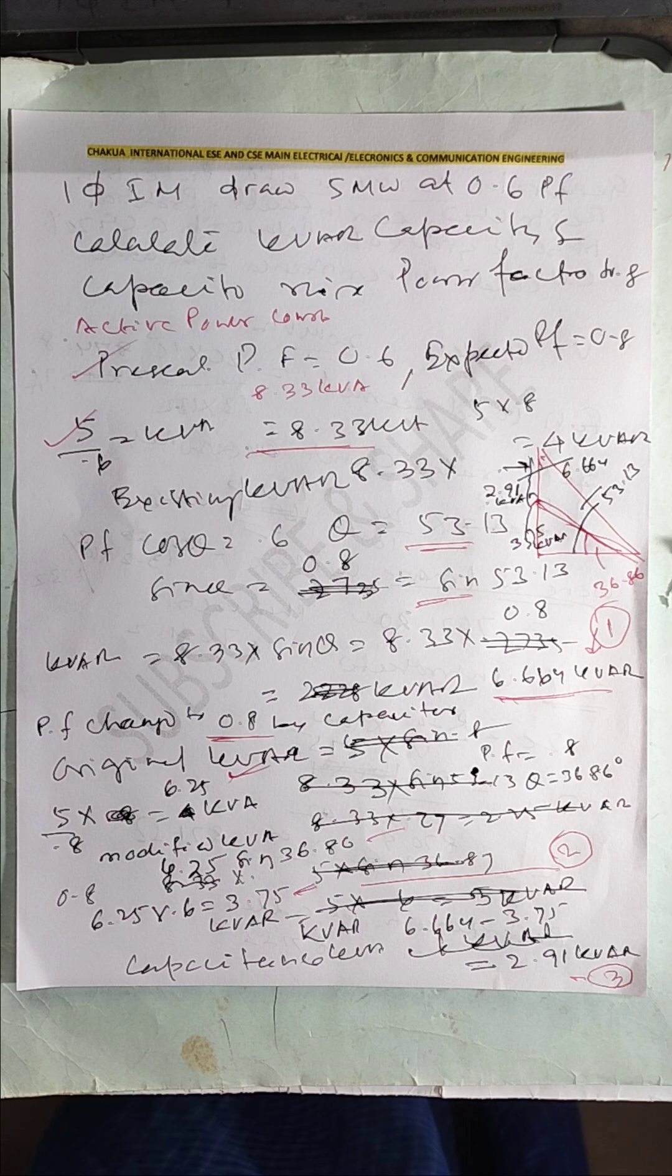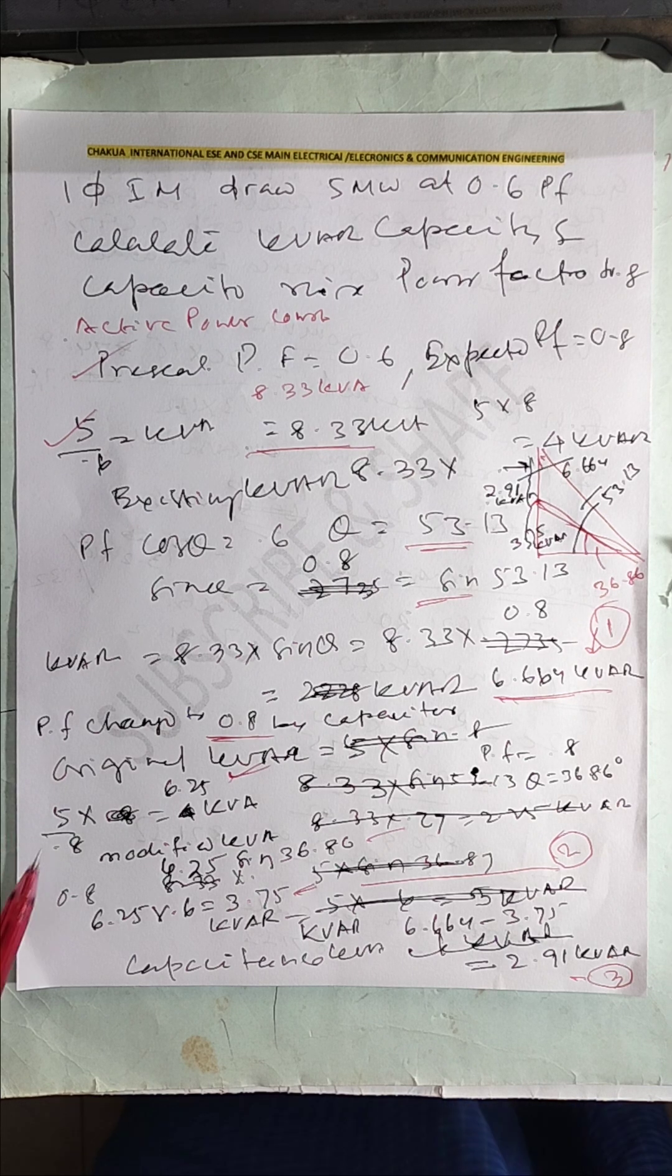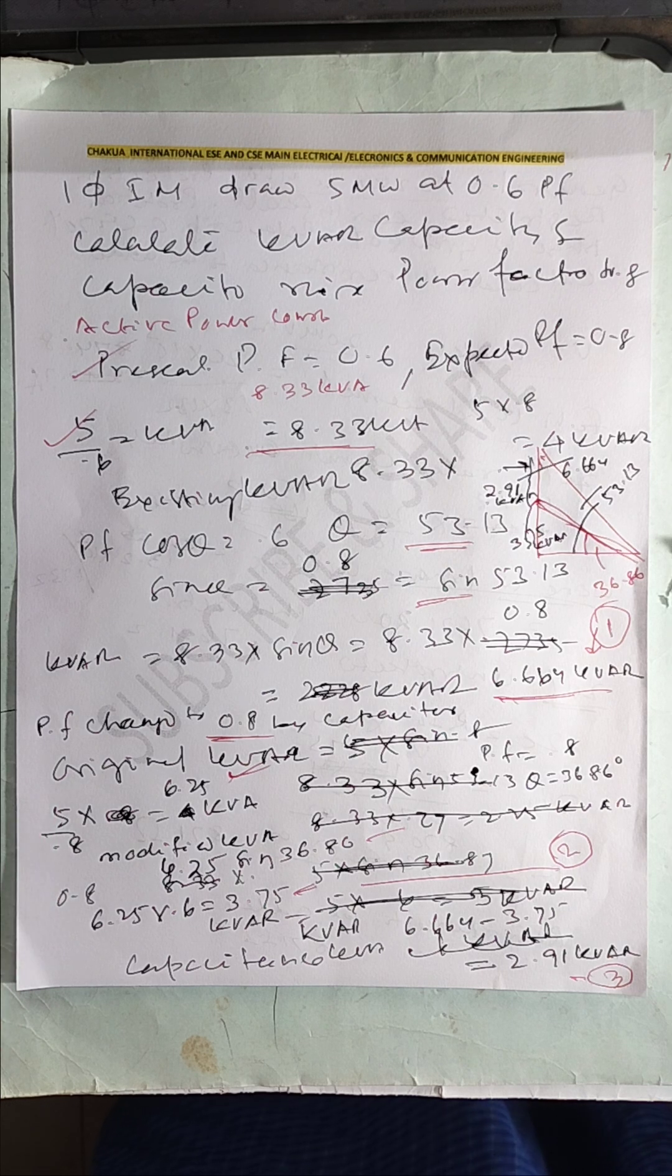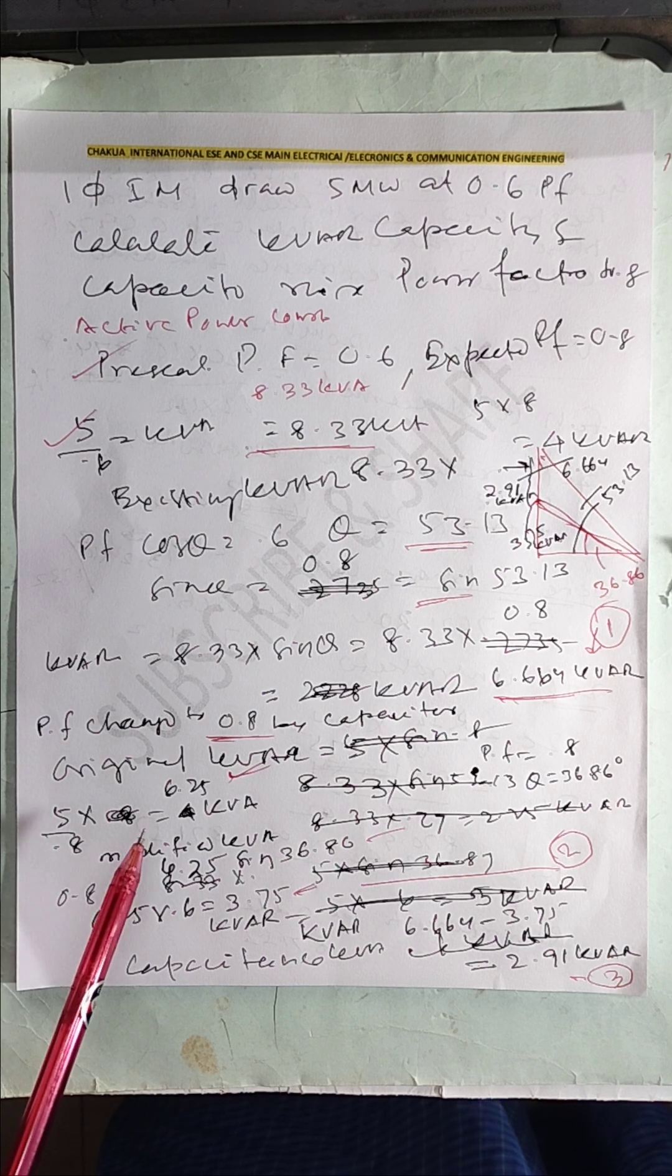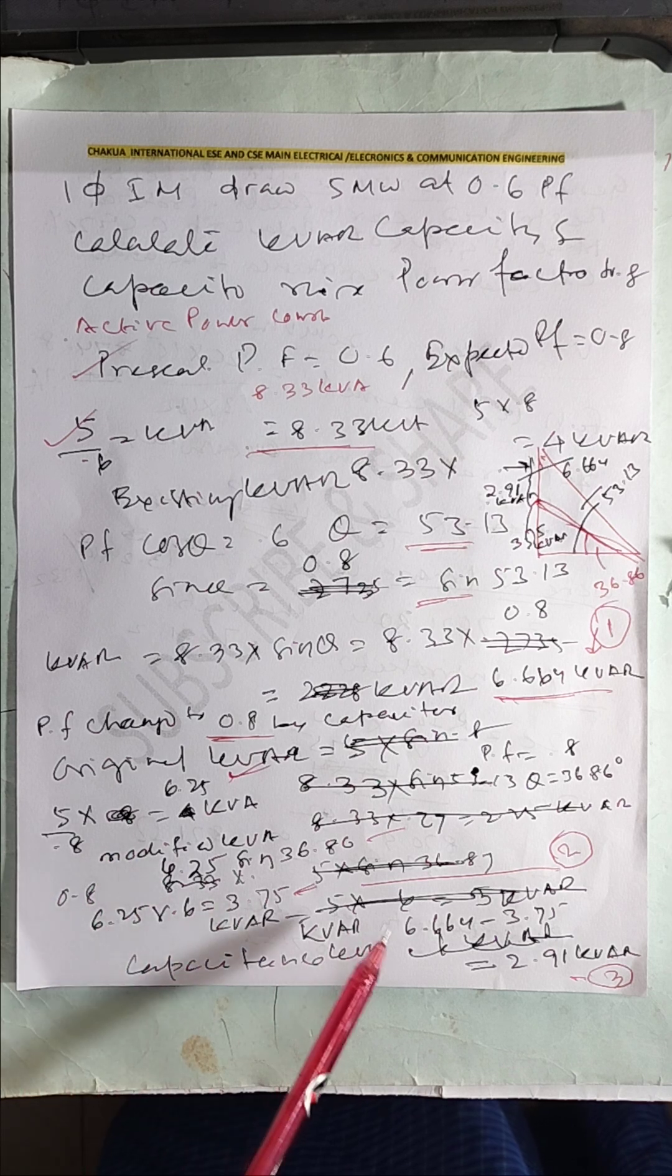Now you change to 0.8 with a capacitor. What is the kVAR of the capacitor? The active power 5 kW remains constant. Now kVA is 6.25, sine theta is 0.6 in this case.